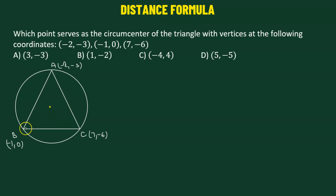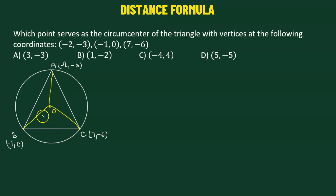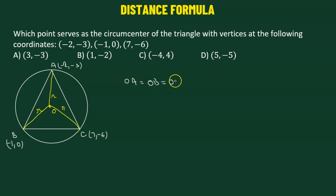We'll do a construction first. We'll call the center as O. If we join OB, OA, and OC, those are going to be the radius of the circle. Since they are radii of the same circle, we can say that the length of OA must equal the length of OB, and that must equal the length of OC. Let this be equation number 1.